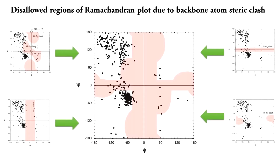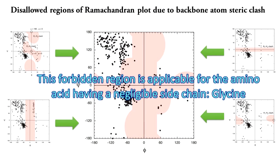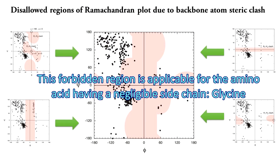So much steric clash! So, what if we combine all these disallowed regions into one? The total forbidden region for the combinations of phi and psi angles for the backbone-backbone steric clashes is shown here. But, is that all? You are indeed forgetting something — the side chain! This forbidden region is only applicable for an amino acid that has a negligible side chain.